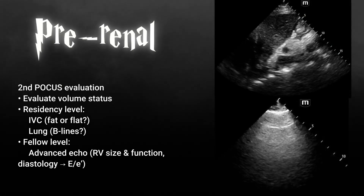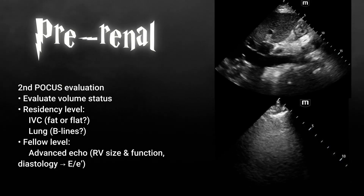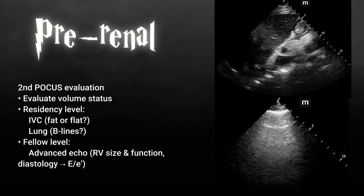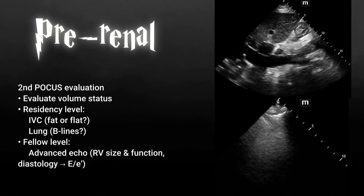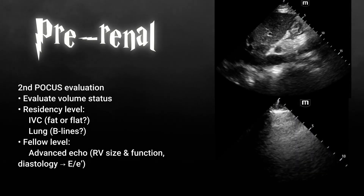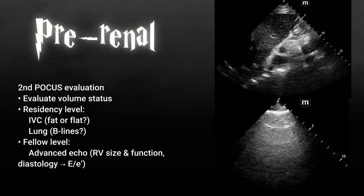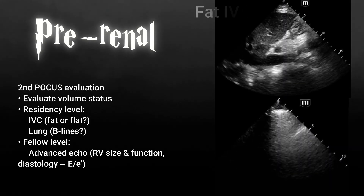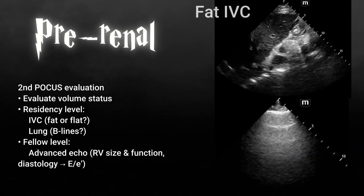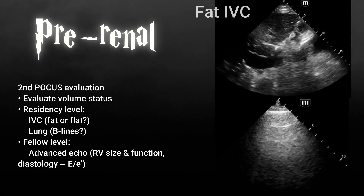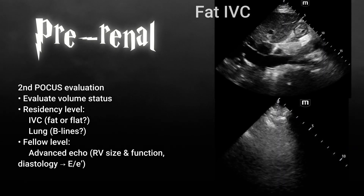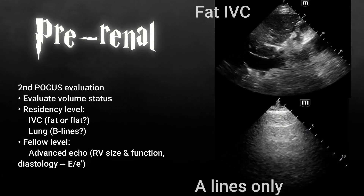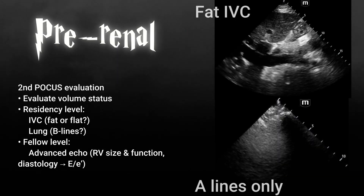This is going to be evaluation of the patient's volume status. I like to think of this as two different levels: either residency level or fellow level. The residency level volume status evaluation will be looking at the IVC to determine if it's fat or flat, as well as looking at the lungs for B-lines, which indicates interstitial or alveolar fluid.